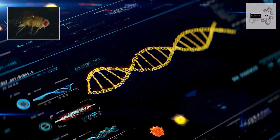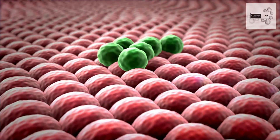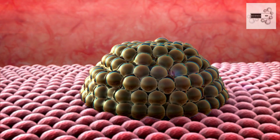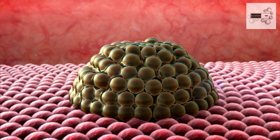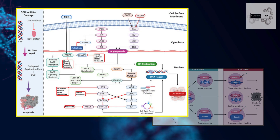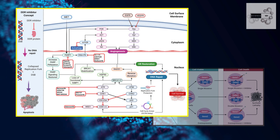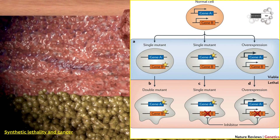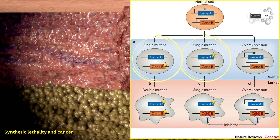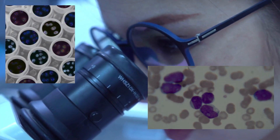While the initial discoveries were made in model organisms, the true power of synthetic lethality lies in its exploitation for targeted cancer therapies. Cancer cells, through their relentless quest for survival, accumulate a multitude of genetic mutations. By identifying these mutations and their dependencies, we can create a synthetic lethal scenario. Synthetic lethality occurs when the combination of mutations in two or more genes leads to cell death, but a mutation in just one of those genes does not. In other words, the cellular machinery can handle one malfunction, but not both.